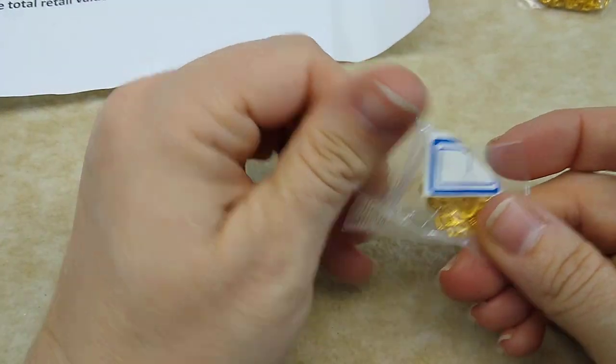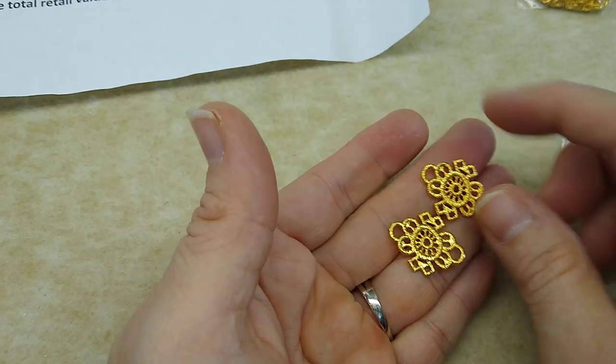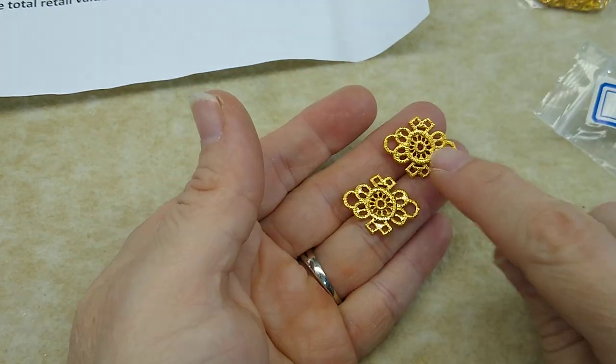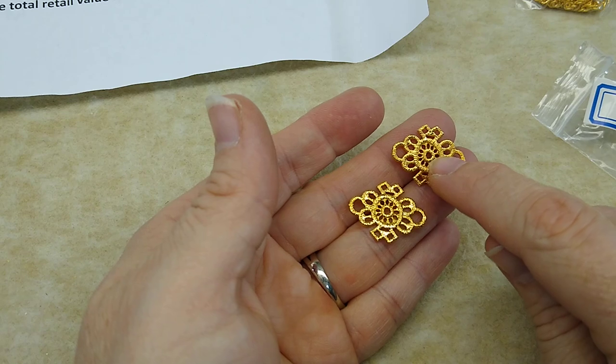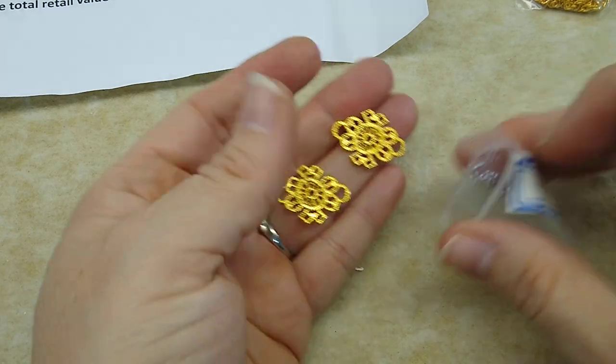Number seven, two pieces of 23 by 18 millimeter, fancy filigree brass links. That's number seven, which I'm looking for. Here it is. Okay. Those are cute. Look how cute those are. Little links and be really cute to glue a crystal in the middle or a tiny little resin flower. Oh, those are pretty.